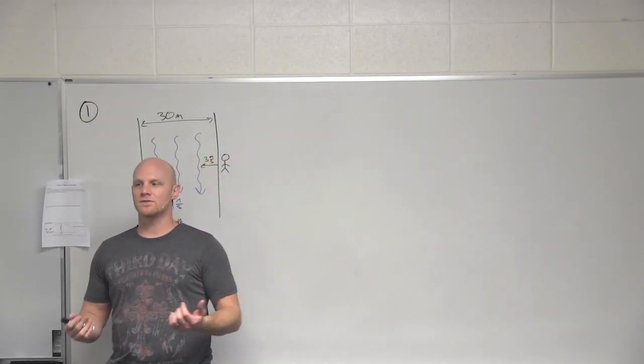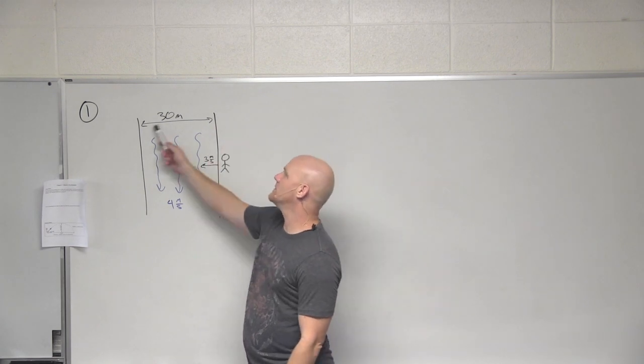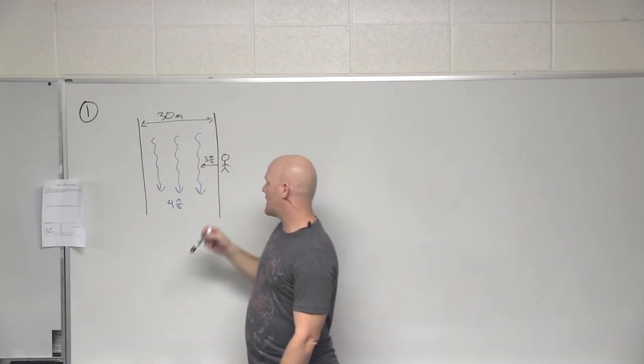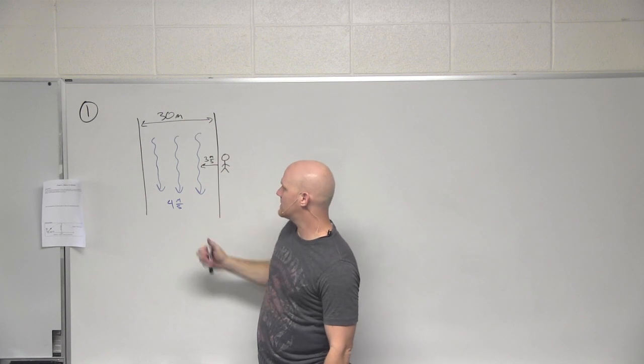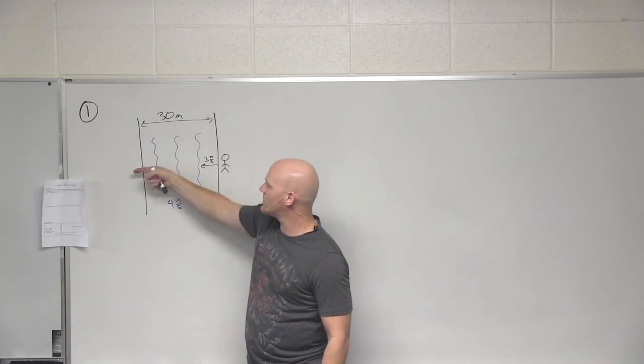So motion in two dimensions. The first thing we're going to start with is classic relative motion problems. In this case we've got a 30 meter wide river. It is flowing north to south, four meters per second, and this guy's going to try and cross by crossing perpendicular to the current here.